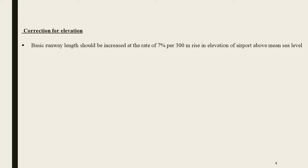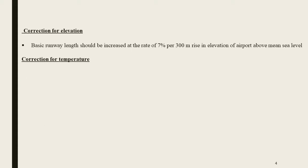First, correction for elevation. For elevation correction, for every 300m rise above mean sea level, there is a 7% increase in the basic runway length.